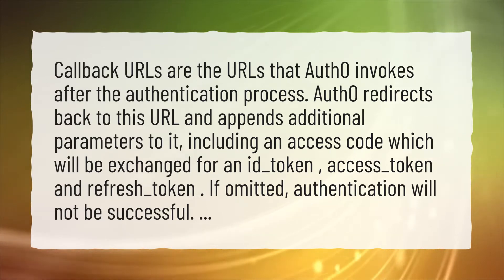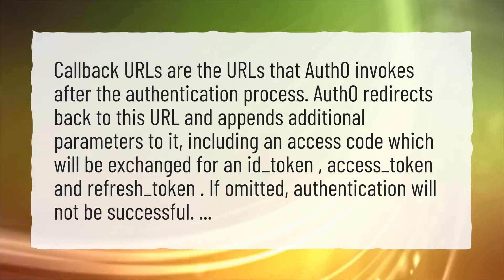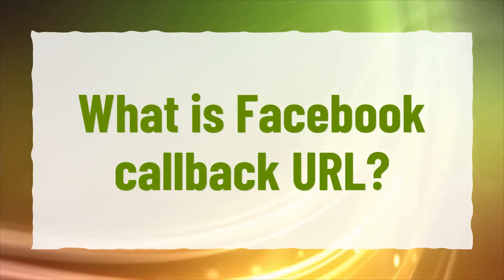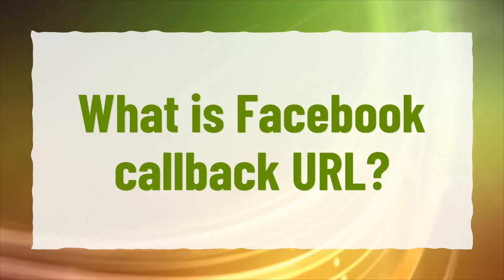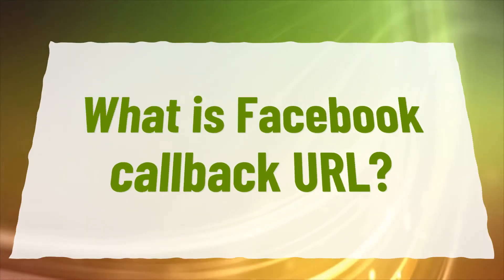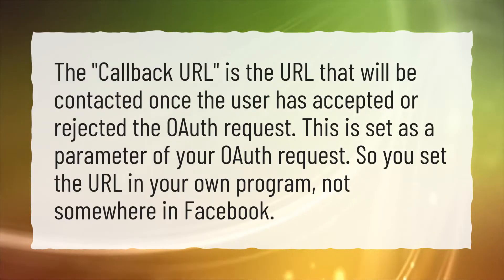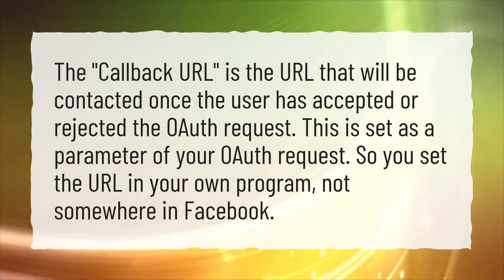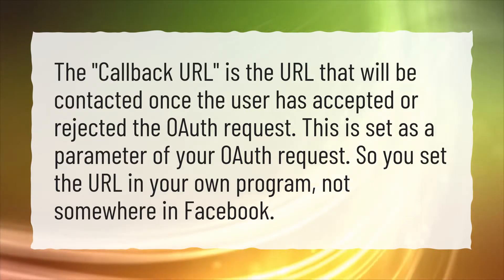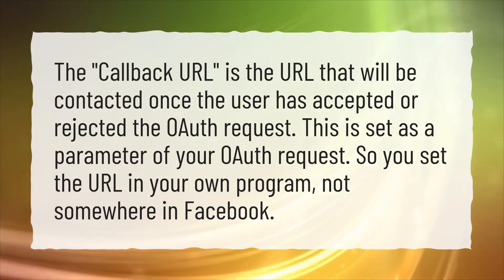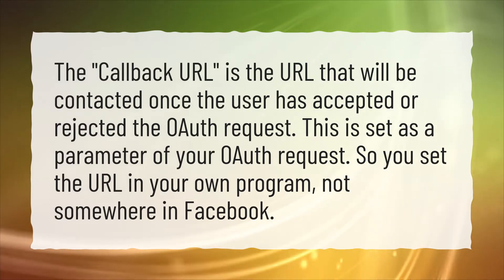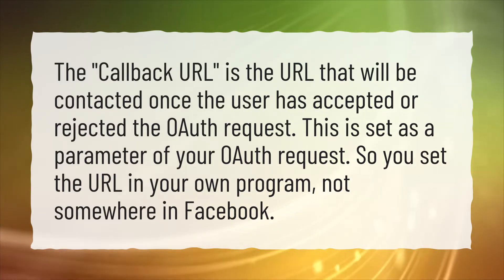If omitted, authentication will not be successful. What is a Facebook callback URL? The callback URL is the URL that will be contacted once the user has accepted or rejected the OAuth request. This is set as a parameter of your OAuth request, so you set the URL in your own program, not somewhere in Facebook.